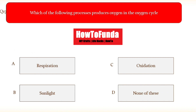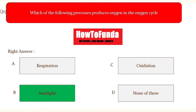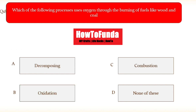Question number seventeen: which of the following processes produces oxygen in the oxygen cycle? Option A respiration, option B sunlight, option C oxidation, option D none of these. The correct answer is sunlight.